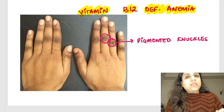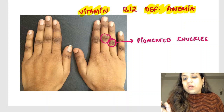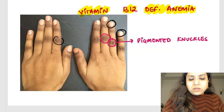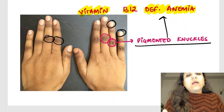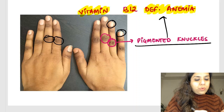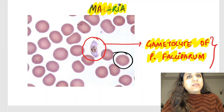See the nails in this patient — this image has also been asked in one of the exams. The nails look normal; there is no spooning. But look at the knuckles — can you see the darkish pigmentation of the knuckles? These pigmented knuckles are seen in megaloblastic anemia due to vitamin B12 deficiency.